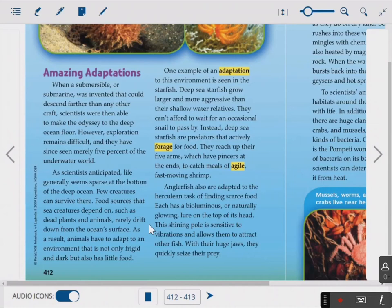One example of an adaptation to this environment is seen in the starfish. Deep sea starfish grow larger and more aggressive than their shallow water relatives. They can't afford to wait for an occasional snail to pass by. Instead, deep sea starfish are predators that actively forage for food. They reach up their five arms, which have pincers at the ends, to catch meals of agile, fast-moving shrimp. I would ask you guys if you want to YouTube a deep sea starfish, and also I would YouTube a live giant squid. See what you guys can come up with. I'd love to see anything that you guys can come up with. You can feel free to email me.